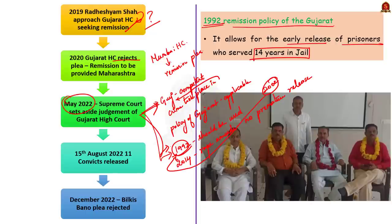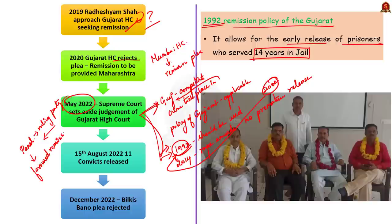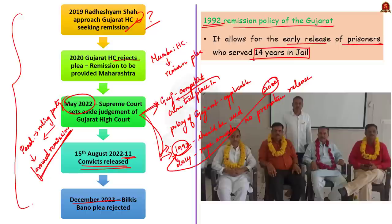The state government accepted the recommendation of the panel, and on August 15, the 11 convicts of the Bilkis Banu case walked free from Godhra Sub-Jail. After this, Bilkis Banu filed a petition in the Supreme Court asking it to review the May 2022 judgment. Recently, in December 2022, the Supreme Court rejected the plea of Bilkis Banu. The author of this editorial cites an issue with the May 2022 judgment regarding the validity of the Gujarat government to grant the remission.